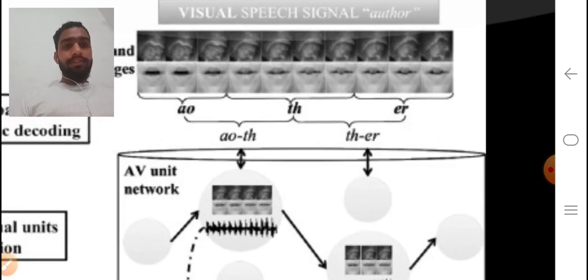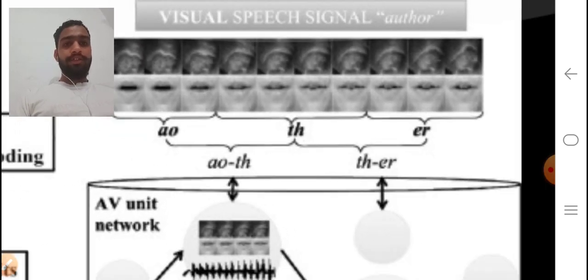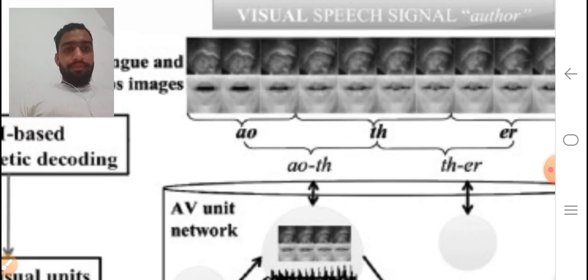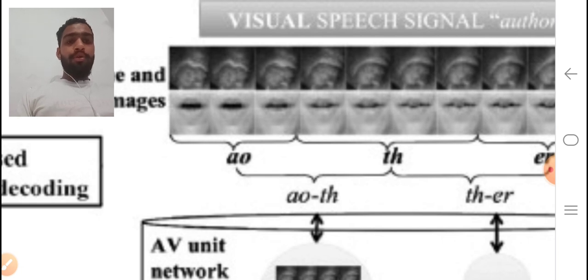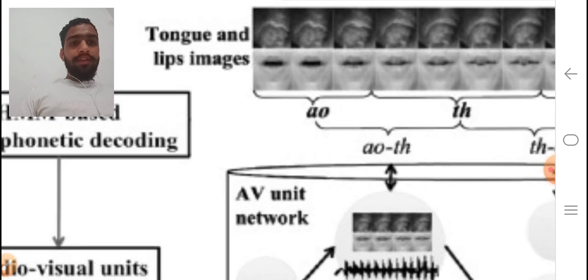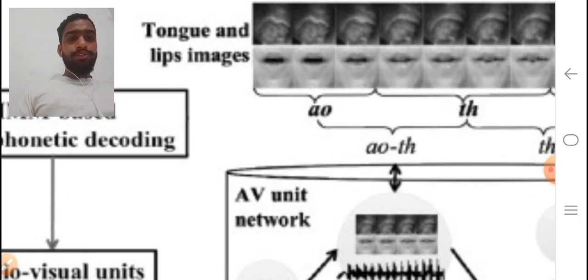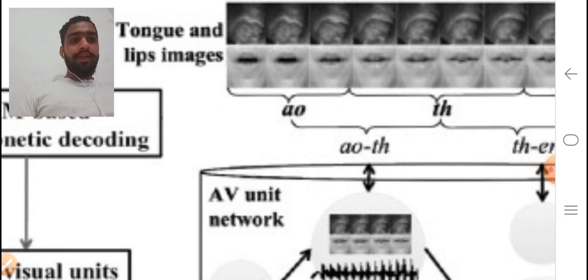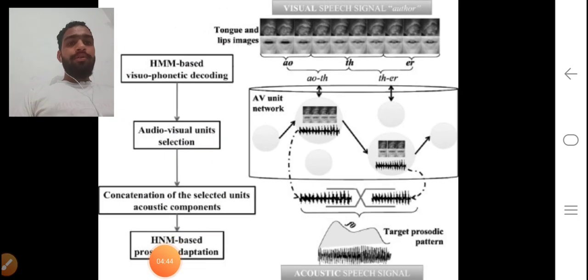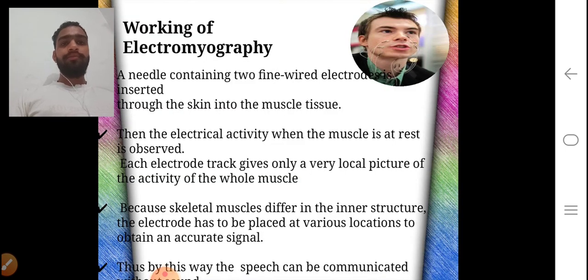As we see in this visual speech signal. The first three images show that we speak 'all' and next four show that we speak 'thar' and last three show that we speak 'thar'. The lower one is our lips which are captured from camera and upper one is our tongue. All these are combined and produce a signal and this is the way which is used by electromyography.